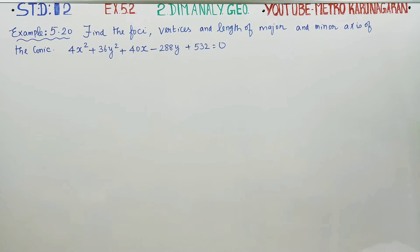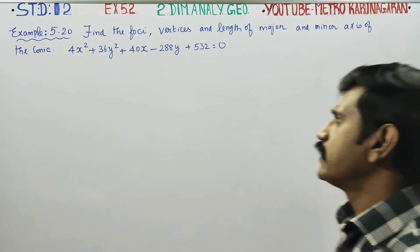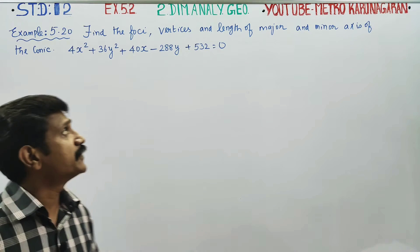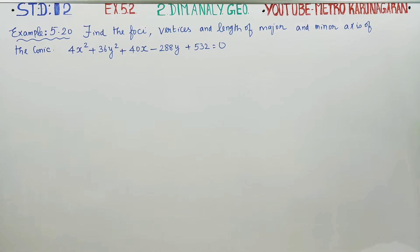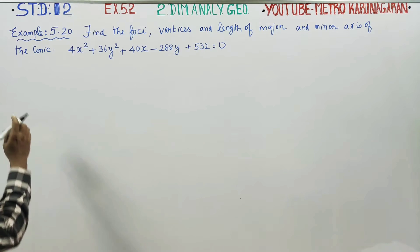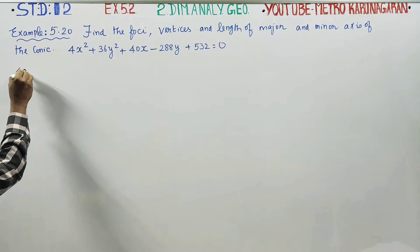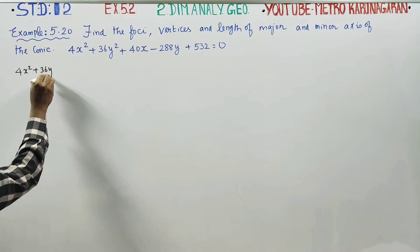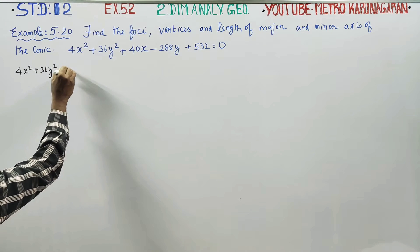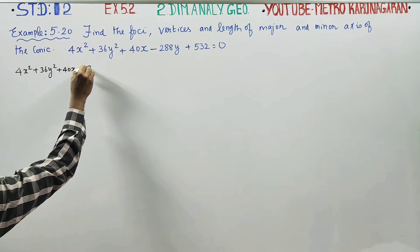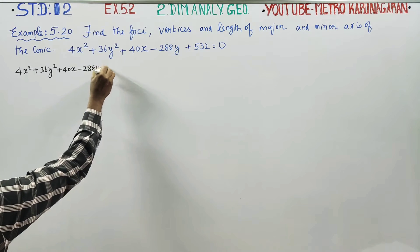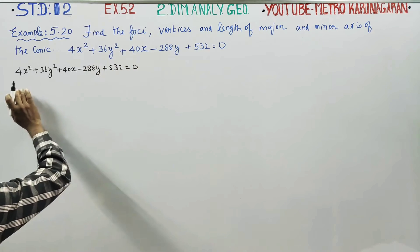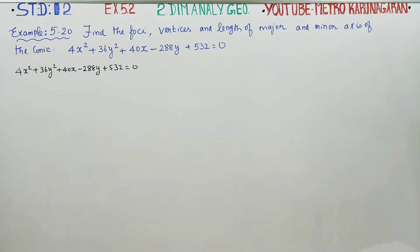Dear 12th standard students, in chapter number 5, two-dimensional analytical geometry, a related example of exercise number 5.2. Example 5.20: find the foci, vertices, length of the major and minor axis. The equation of the conic is 4x² + 36y² + 40x − 288y + 532 = 0.